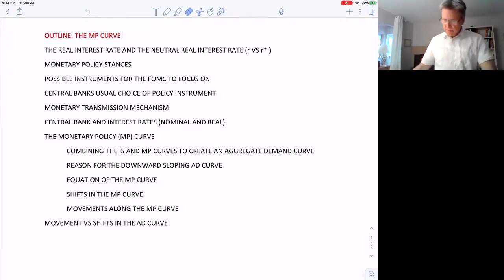Okay, here's the outline of the MP curve. First, we're going to go through the neutral real interest rate or natural interest rate and the different types of stances that our Federal Reserve has from expansionary to contractionary and what the possible instruments there are to carry out their stances.